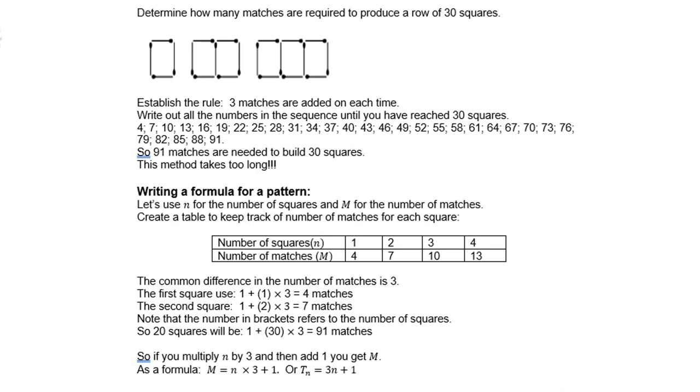So the formula is 3n plus 1. I hope this is quite clear. It's very similar to the previous one. So now you have 3n plus 1.